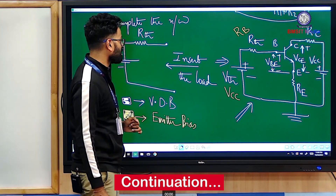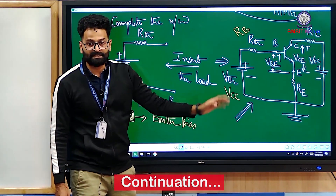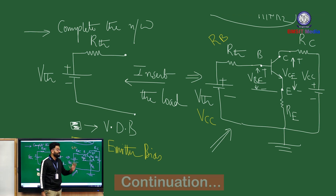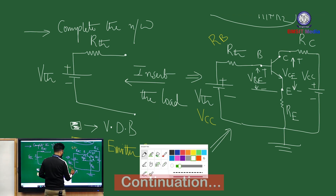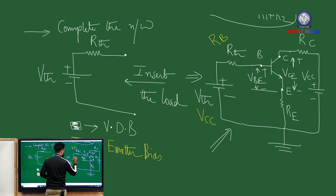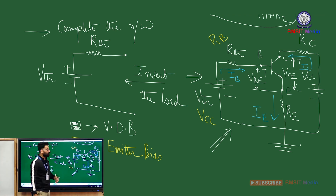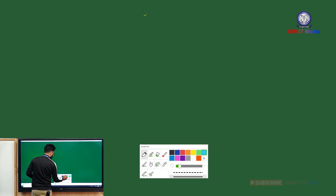In voltage divider bias, in place of VCC you have VTH, and in place of RV you have RTH — that is the difference; the rest remains the same. You can now easily apply KVL on the input side to find IB, and similarly apply KVL on the output side to find IC. Let us quickly apply KVL and see what relation we get. We will note the transistor currents IB and IE — the blue ones are currents. The analysis is pretty much similar to emitter bias.